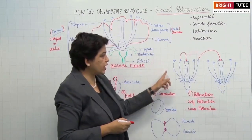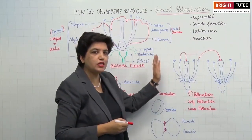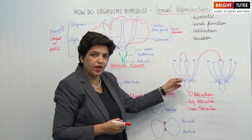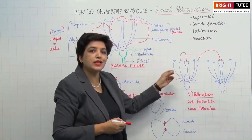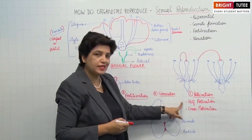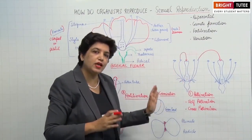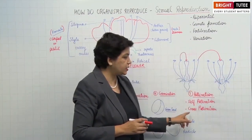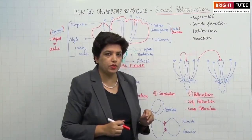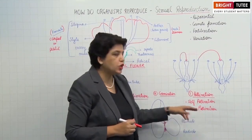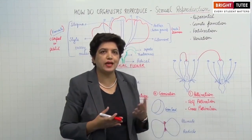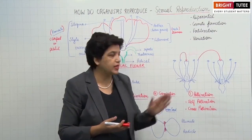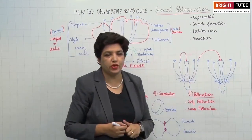So pollination is the transfer of pollen grains from anther to stigma. If it occurs in the same flower or the same plant it is called self-pollination, but if it occurs from one plant to another plant it is called cross-pollination.